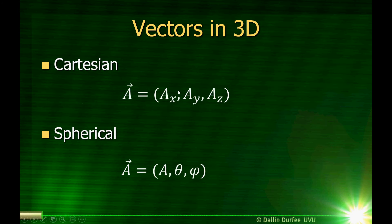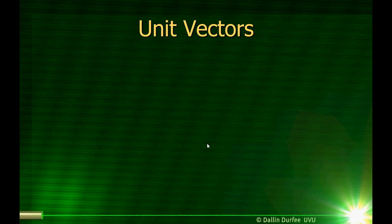In three dimensions for Cartesian coordinates, I just have to add a z component. The equivalent of polar coordinates in three dimensions is called spherical coordinates, but we won't be using spherical coordinates in this course. Now, unit vectors: a unit vector is a vector that points in some direction but has a magnitude of 1 — it has a length of 1, it is 1 unit long.